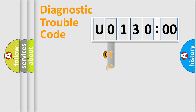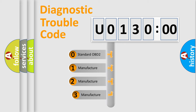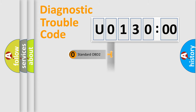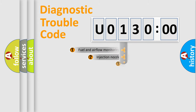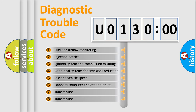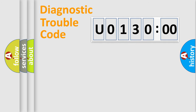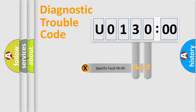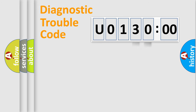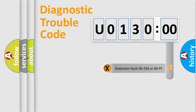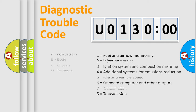This distribution is defined in the first character of the code. If the second character is expressed as zero, it is a standardized error. In the case of numbers 1, 2, or 3, it is a manufacturer-specific error. The third character specifies a subset of errors. This distribution is valid only for the standardized DTC code. Only the last two characters define the specific fault of the group. The add-on to the error code serves to specify the status in more detail, for example, a short to ground. Note that such a division is valid only if the second character is expressed by the number zero.